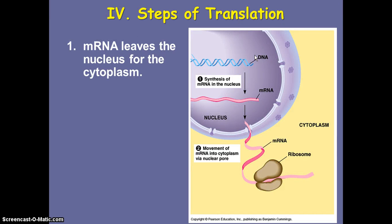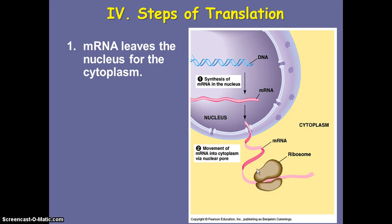Let's talk about the steps. The steps of translation really start with what we ended transcription with. Transcription ended with a copy of one specific gene from DNA into an mRNA. That mRNA was only for one specific gene — we didn't copy the entire DNA double helix. So we have a copy of DNA, just one gene, now as an mRNA. It's stuck in the nucleus, but we need it to get to a ribosome, which is the site of protein synthesis. So that mRNA will leave the nucleus and go into the cytoplasm.